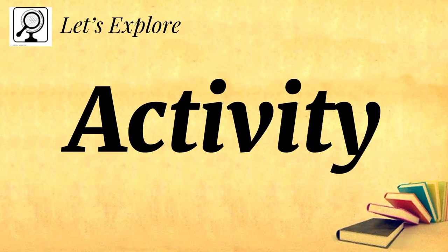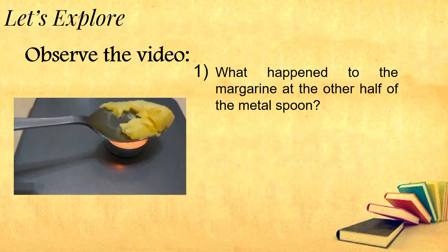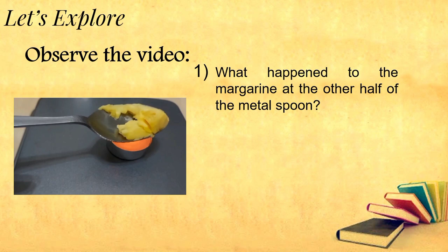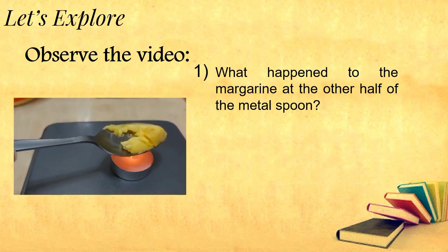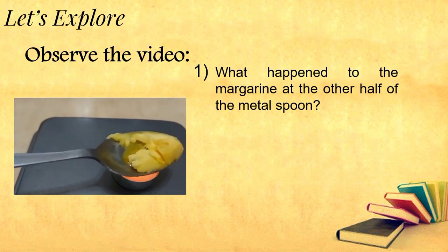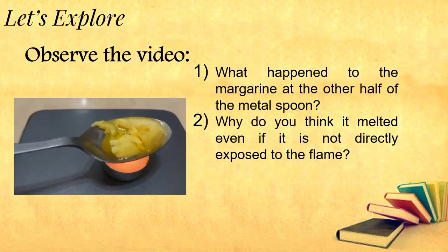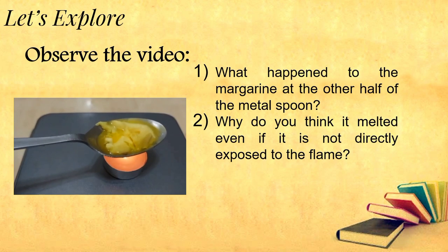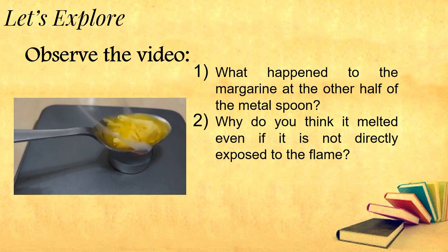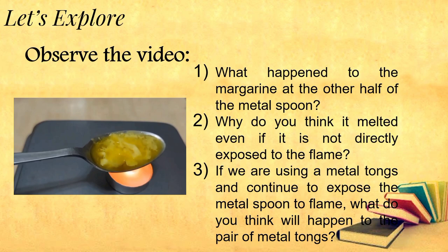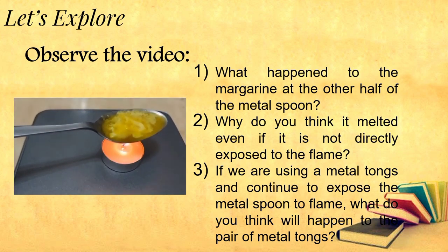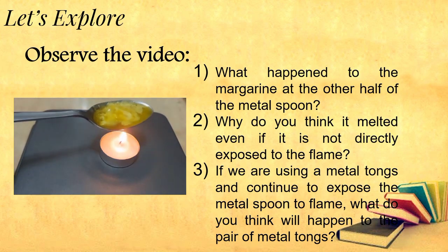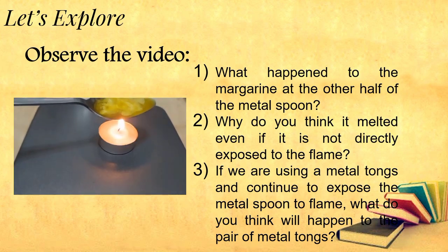It's activity time! Observe the video below. What happened to the margarine at the other half of the metal spoon? Why do you think it melted even if it is not directly exposed to the flame? And if we are using metal tongs and continue to expose the metal spoon to flame, what do you think will happen to the pair of metal tongs?